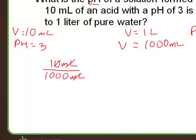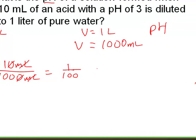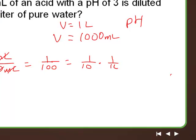Cross out two zeros. This equals 1 over what? 100. Now, we know that the pH is related to the dilution factor. 1 over 100 is equal to 1 tenth times 1 tenth.